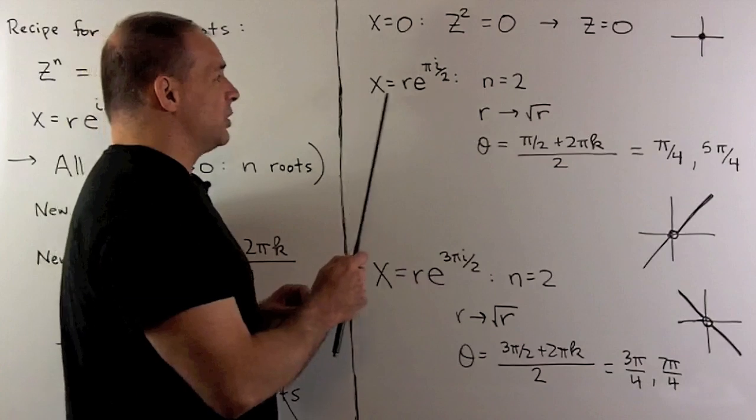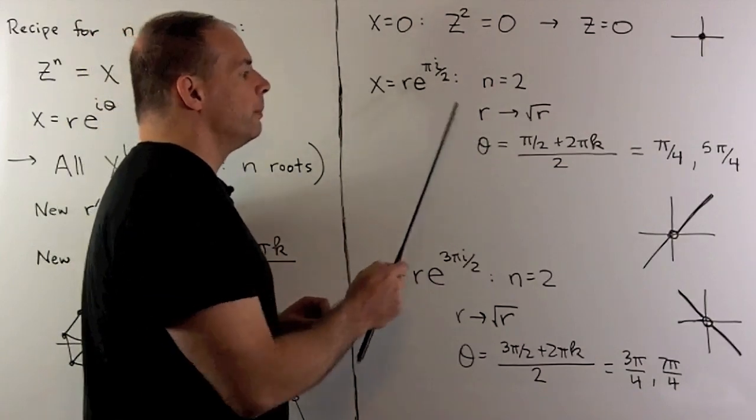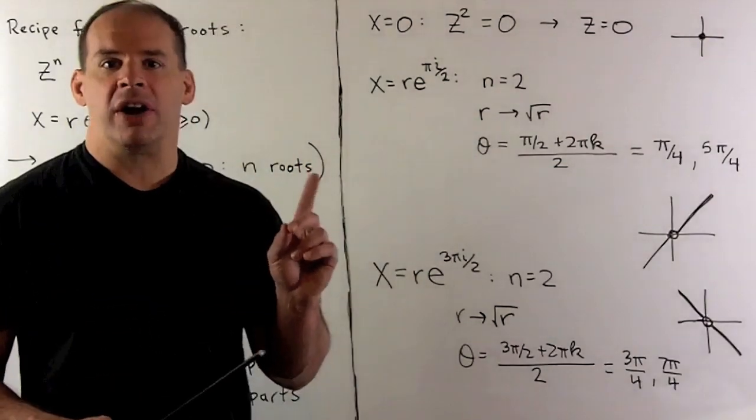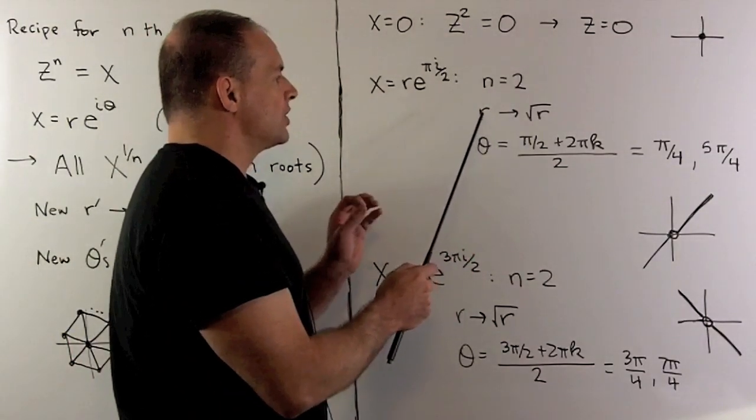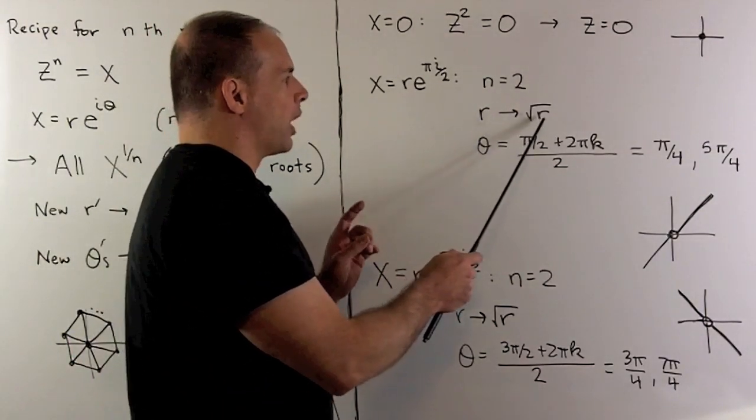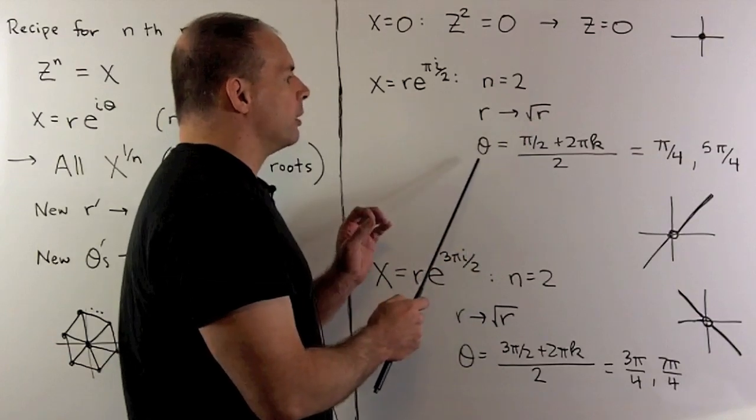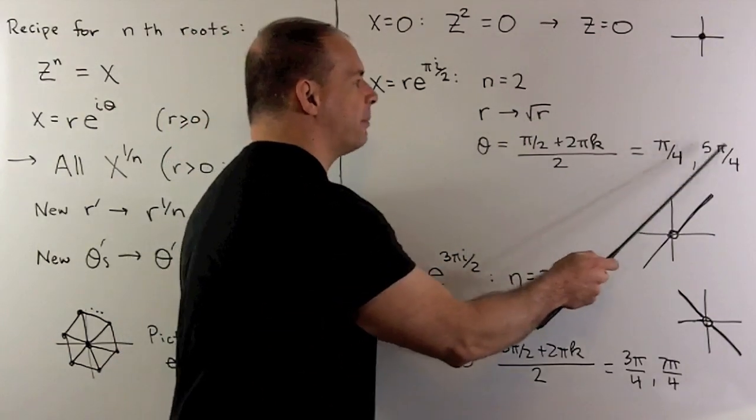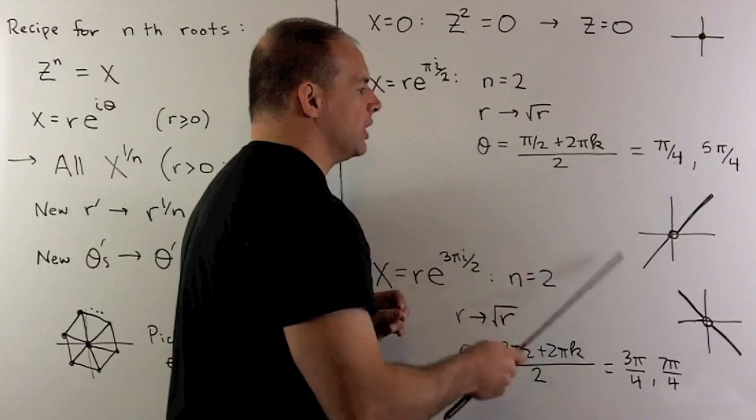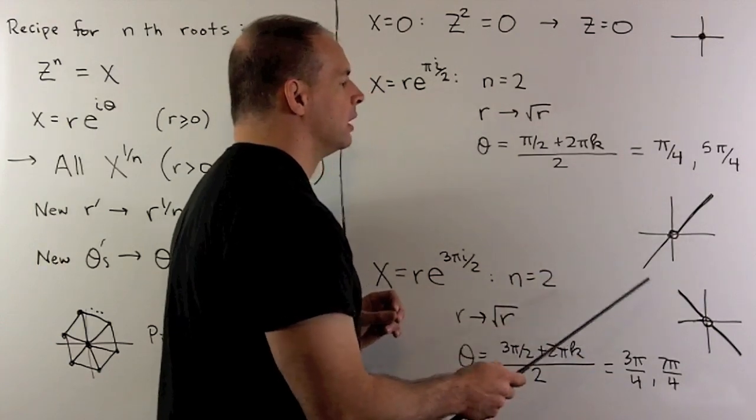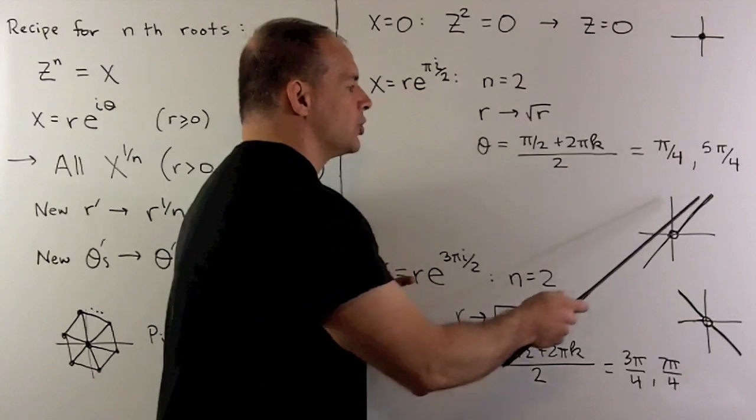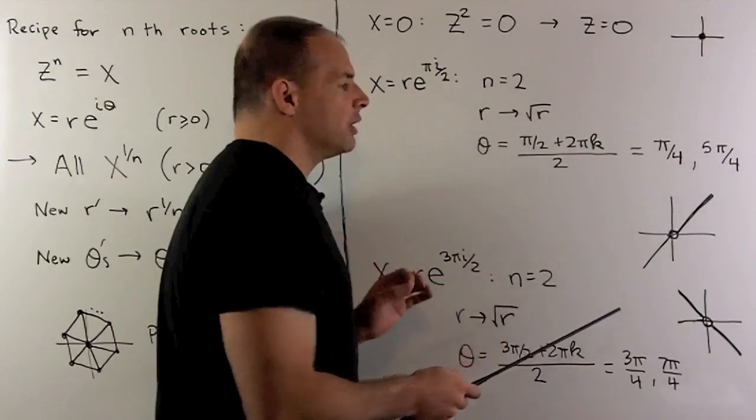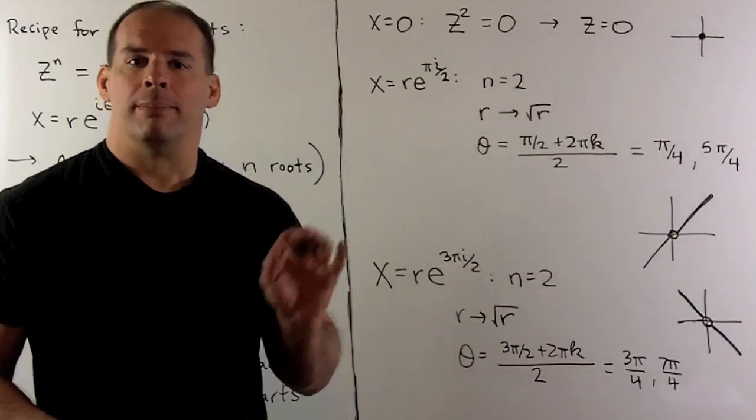When I have x equal to r e to the pi over 2, so it's the upper imaginary axis, our n is equal to 2, so we're going to send our moduli to their square roots. The new arguments are going to be pi over 4, 5 pi over 4, if we stay between 0 and 2 pi. Because we have all values of moduli, we're just going to get the line through the origin at a 45 degree angle, minus the origin.